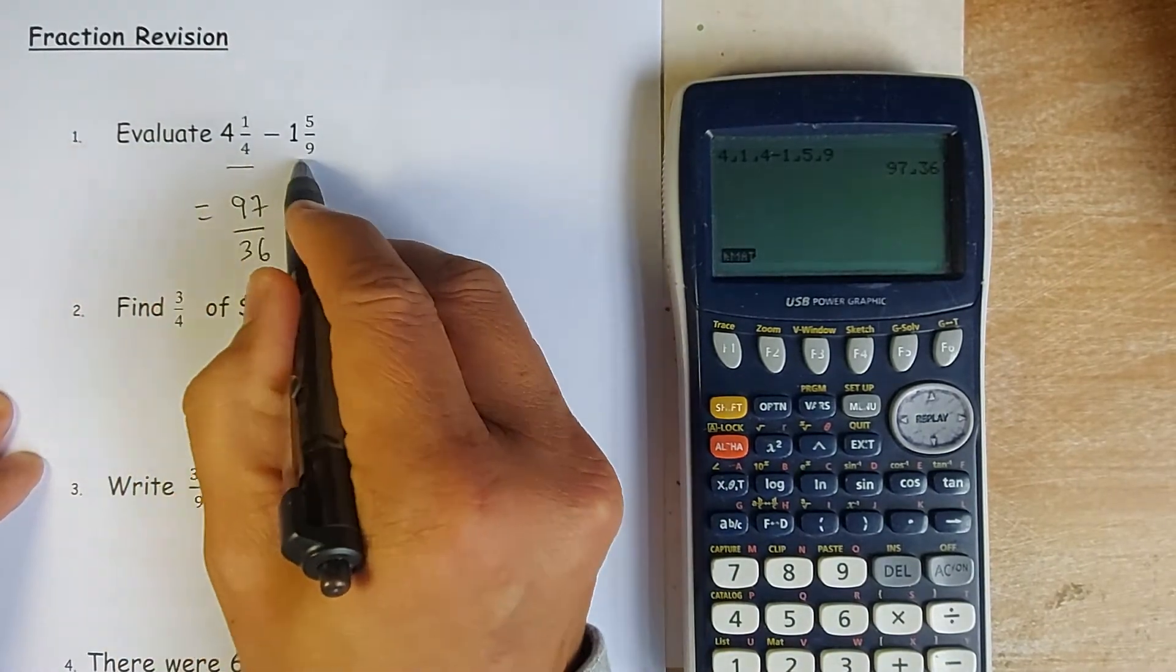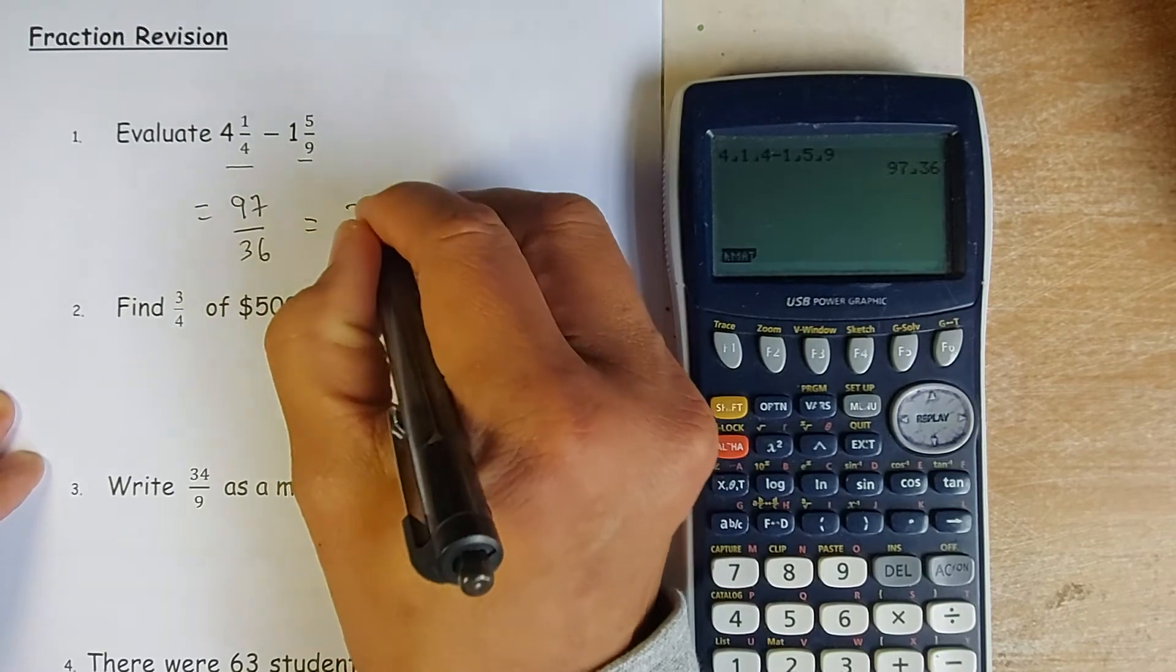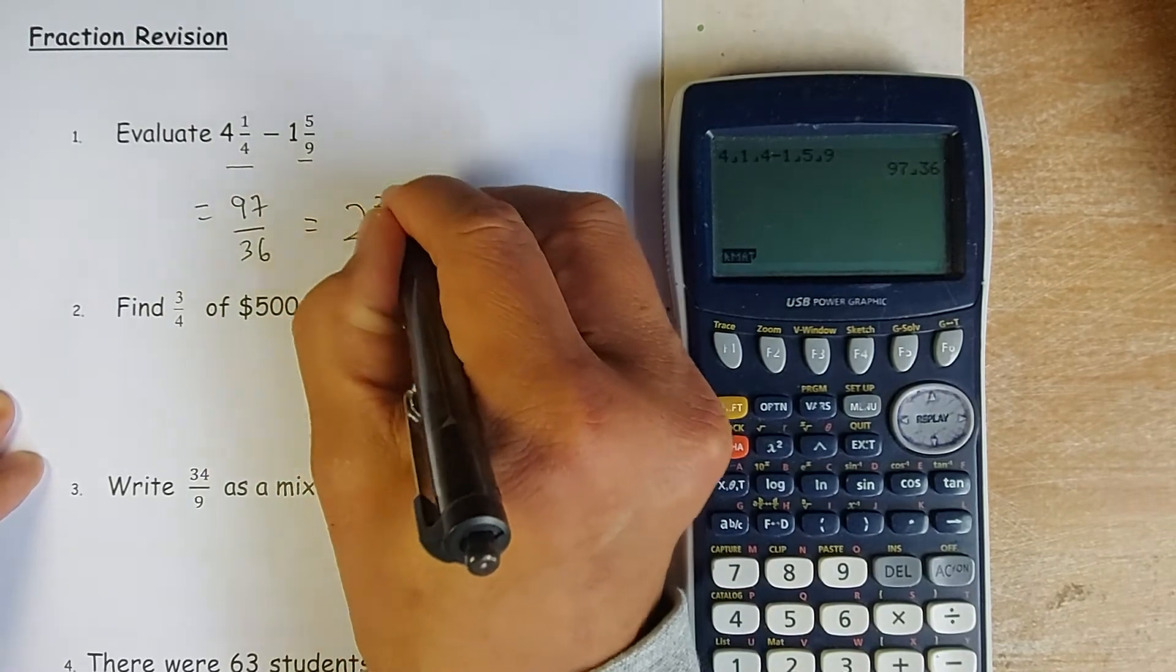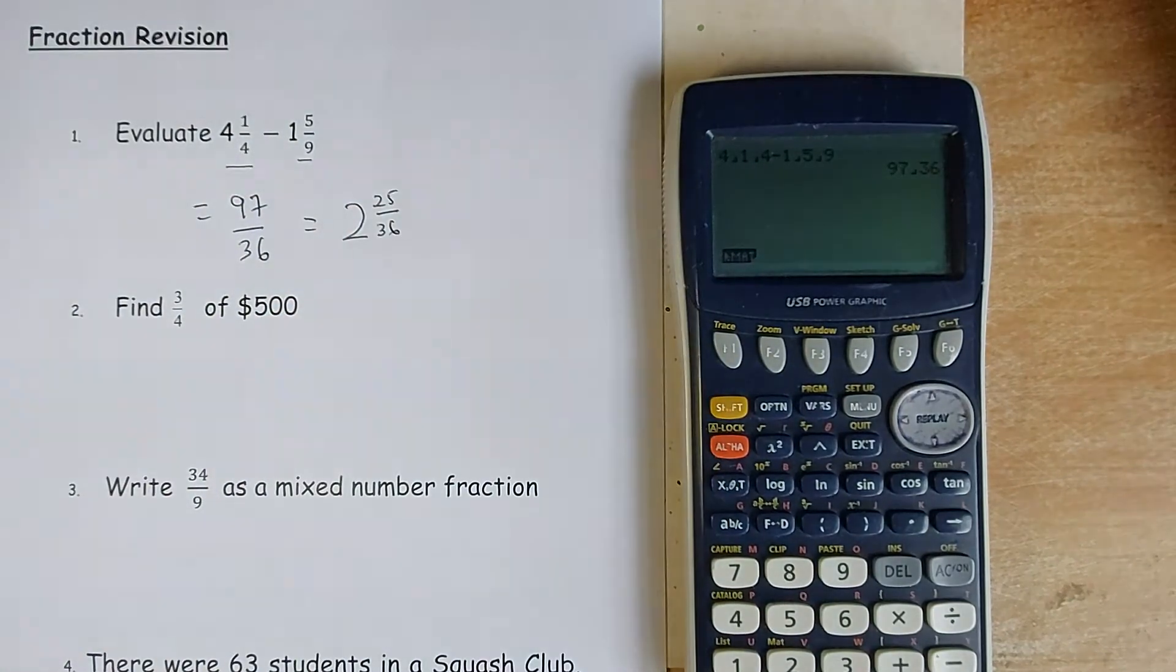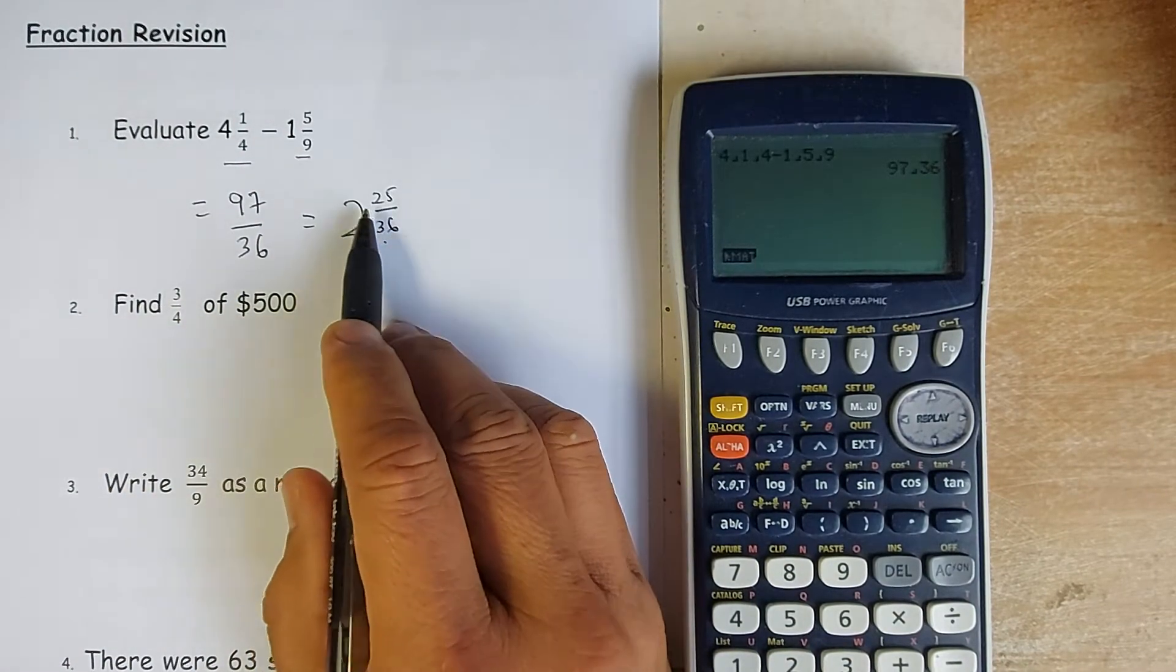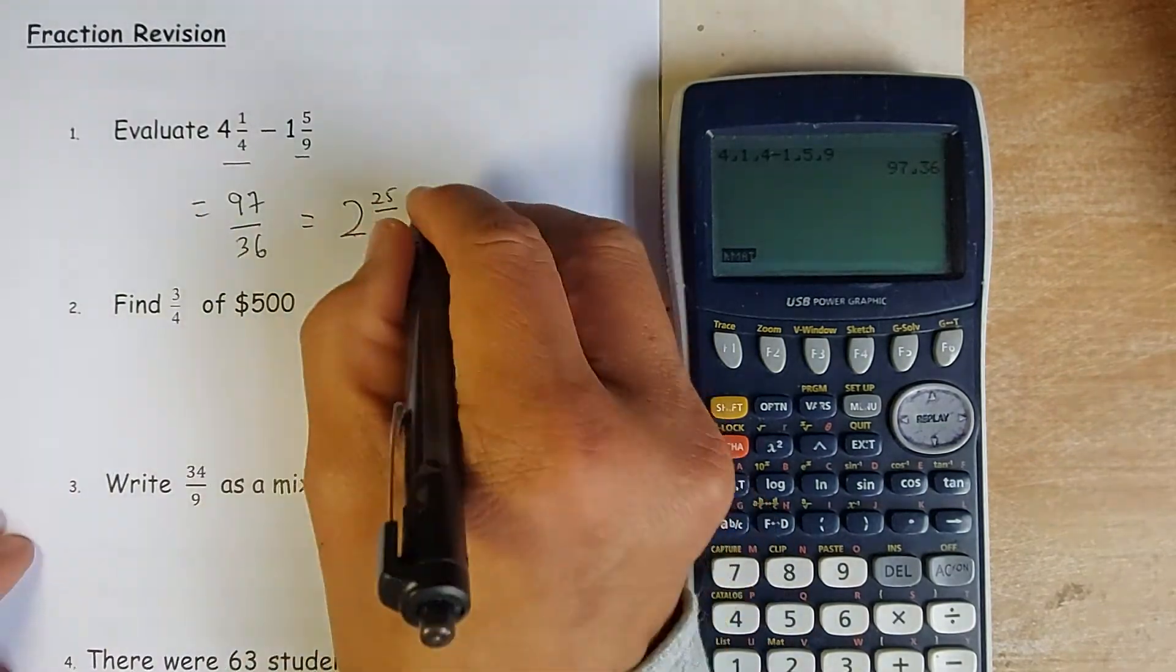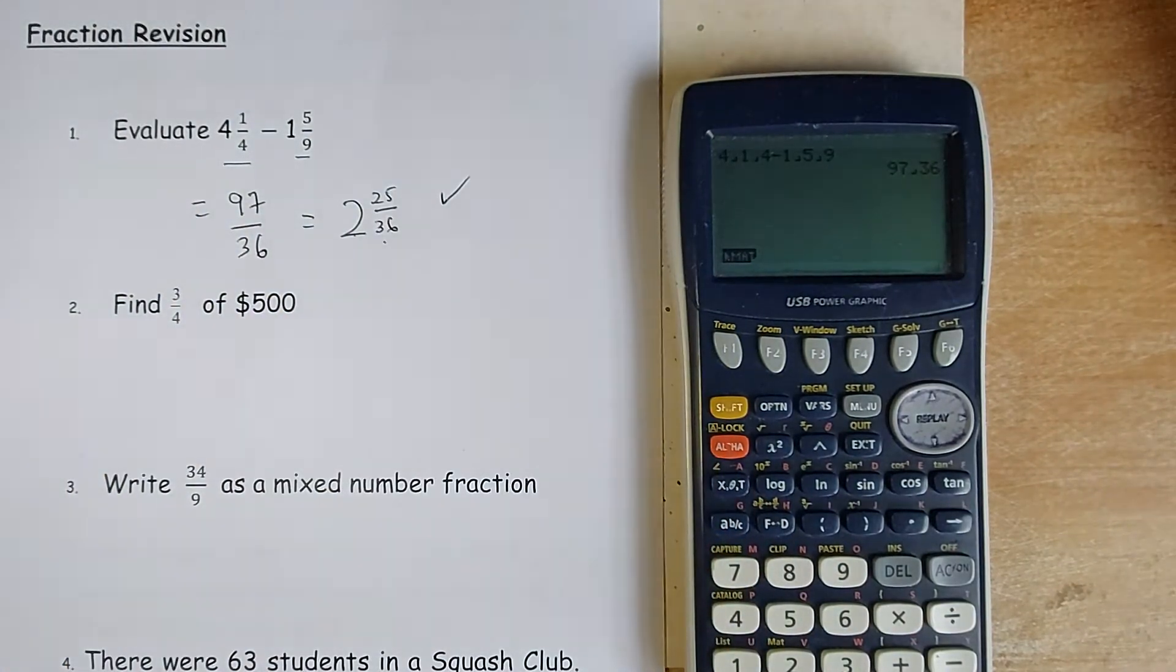But because the question is a mixed number, you have to change it to the mixed number. So it's going to be 2 and 25 over 36. So 36 times 2 is 72, 72 plus 25 is going to be 97. So that's how you get the first one. That's one mark in the exam.